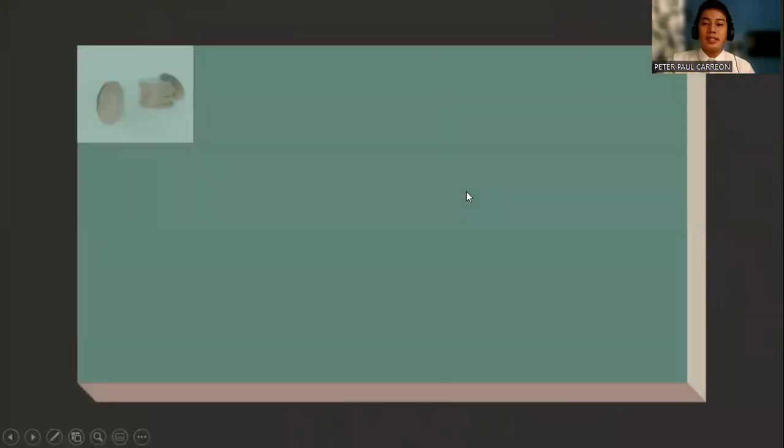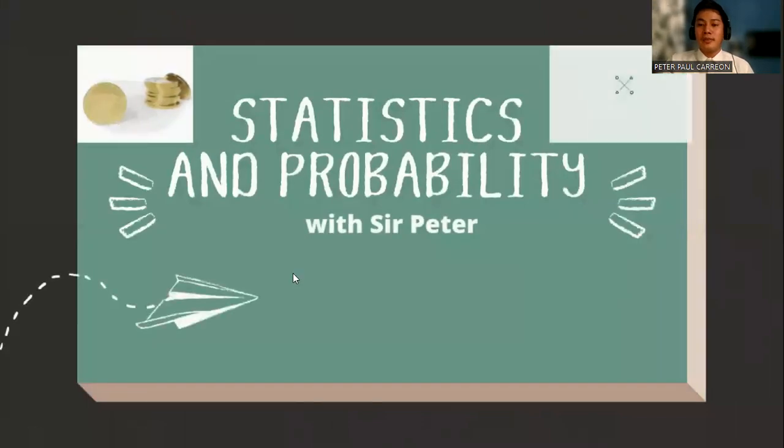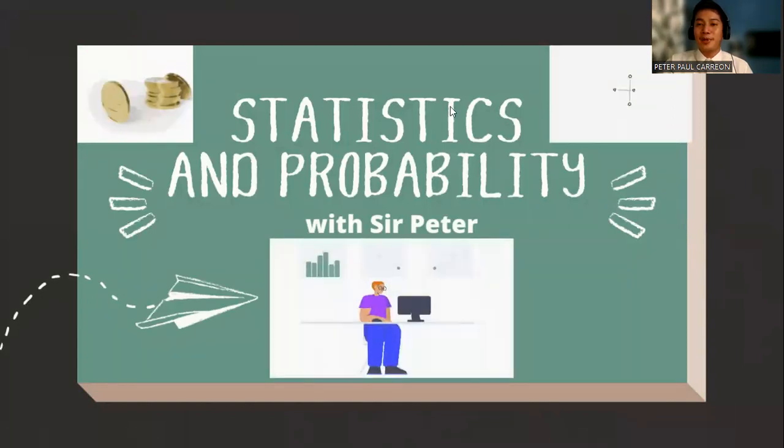So that ends my discussion for the traditional method when sigma is known. So on the next video lesson, we will talk about traditional method when sigma is unknown. This is again Sir Peter, your statistics and probability teacher.